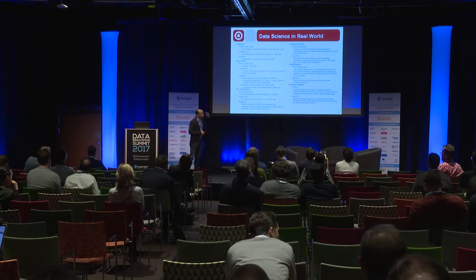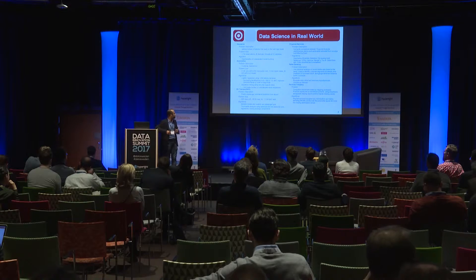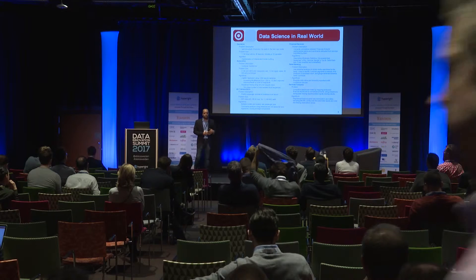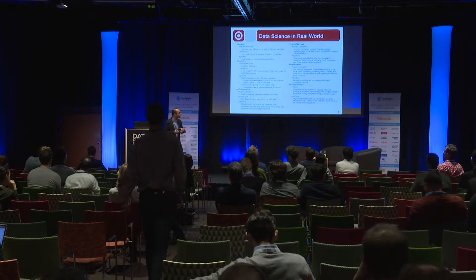For example, one automotive company wanted to build a predictive model that can predict when a car becomes a lemon — the point at which the company has to reacquire that car and give out a new car at no cost. The sooner they predict, the better for the company and customer satisfaction. While building that model, the key aspect we learned is the more features we add, the better the model. When we increased features from 250 to 20,000, precision and recall improved dramatically.